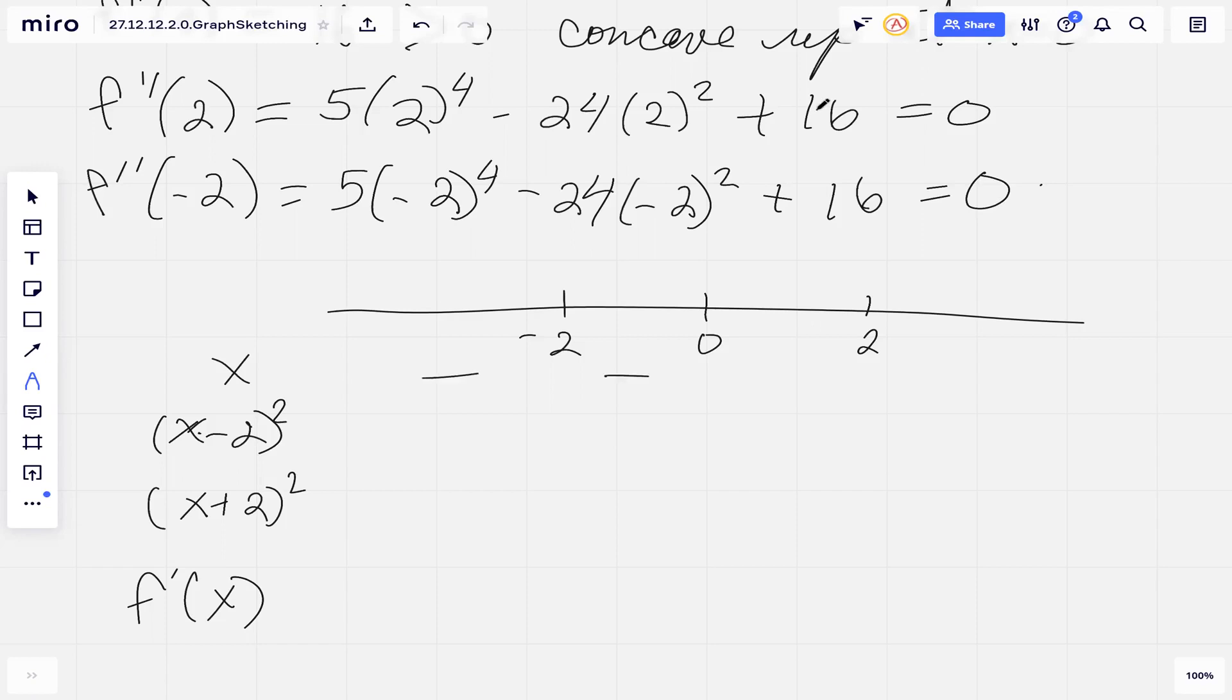Obviously, when x is less than zero, it's going to be negative, and when it's greater than zero, it's going to be positive. Each of these other terms, x minus two all squared, x plus two all squared, whether the x value is negative or positive, the factor itself is always going to be positive because we're taking the square. So we're always going to get a positive value. This means our derivative is negative when x is less than zero, positive when x is greater than zero.